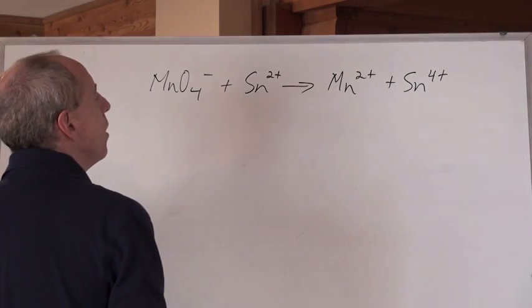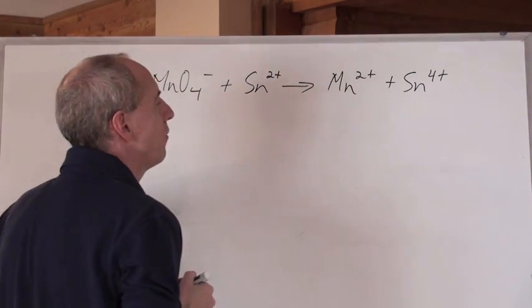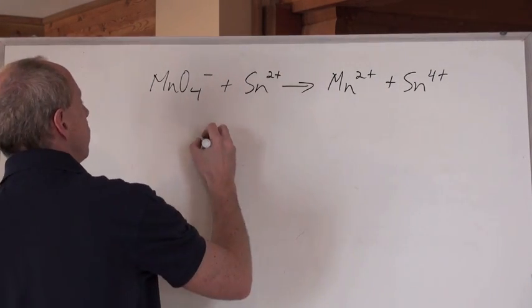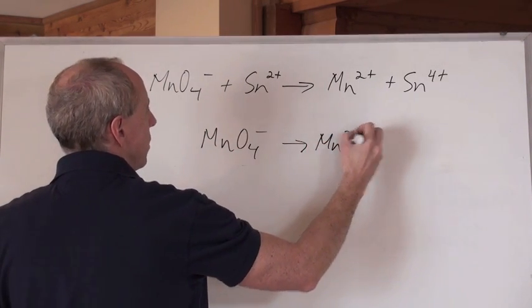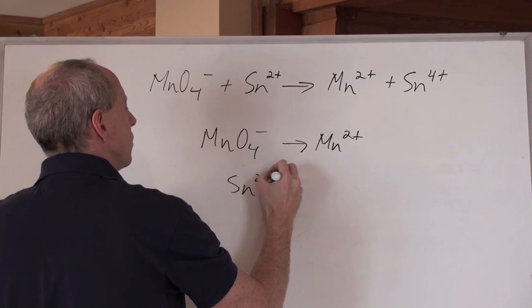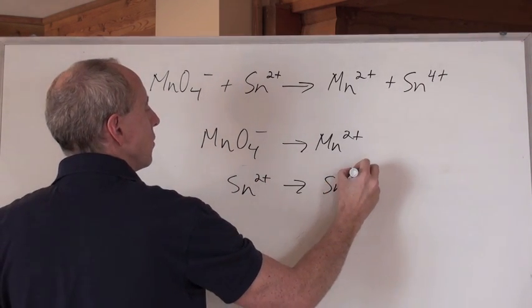So here's how it works. You look at this and say, if I were to break this down to two half reactions, what would they be? Well, first of all, let's think about it. The MnO4 negative has to make the Mn2 positive, because it's got the Mn's in it. And the Sn2 positive has got to make Sn4 positive.